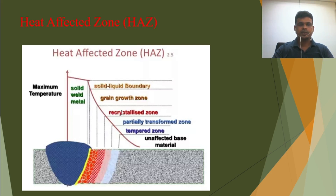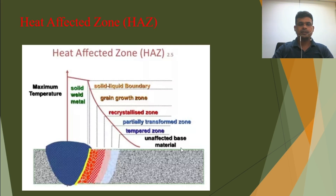You can see the solid-liquid boundary here — this is the fusion line. Within the heat affected zone there are sub-zones: the fusion zone from the fusion line to where metal is fully fused; the grain growth zone, where too much heat has affected the grain structure; the recrystallizing zone; the partial transformed zone, where not too much heat affected and not too much microstructure change, but it is still changed; the tempered zone; and finally the unaffected base metal zone. From the fusion line outward, however much area is heat and microstructure changed is called the heat affected zone.